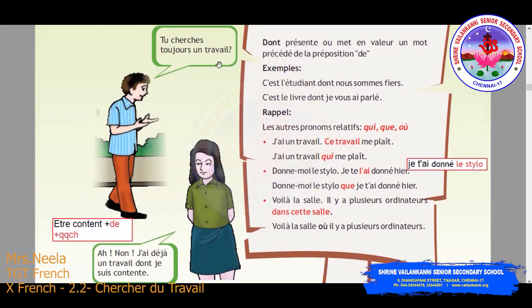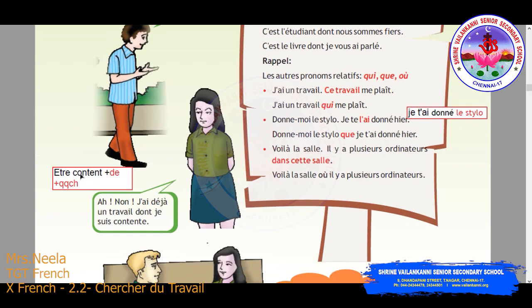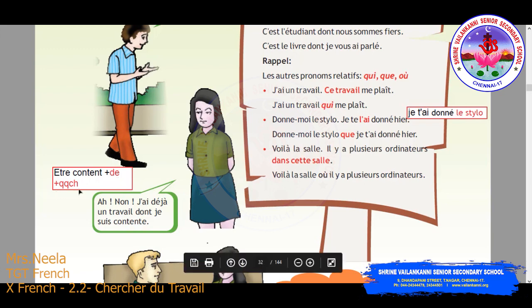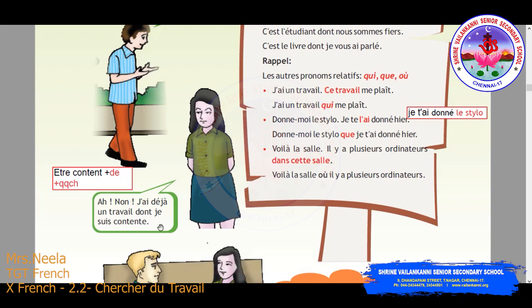Now we see this dialogue also. This person is saying: 'tu cherche toujours un travail?' — 'Ah non, j'ai déjà un travail dont je suis content.' See the expression: 'être content de quelque chose' — that is the expression. So we are replacing 'dont' in place of 'de' plus something. So 'dont' replaces the preposition 'de' plus something. Here 'je suis content de ce travail' — that 'de ce travail' is replaced by 'dont.'